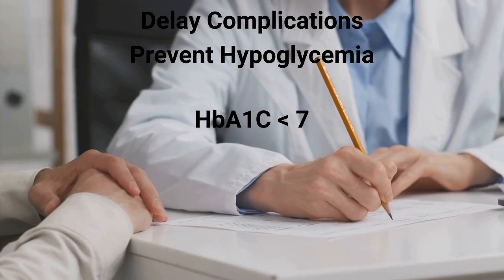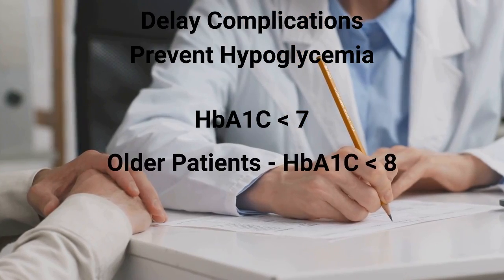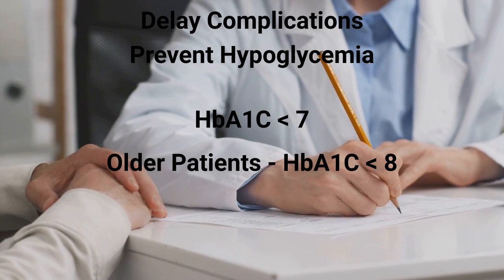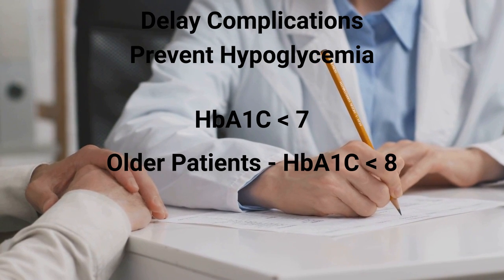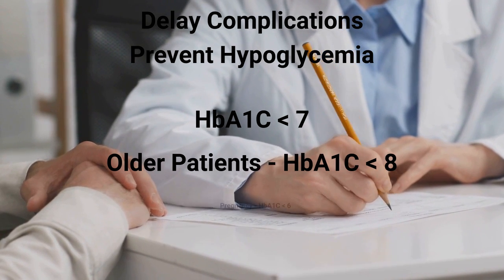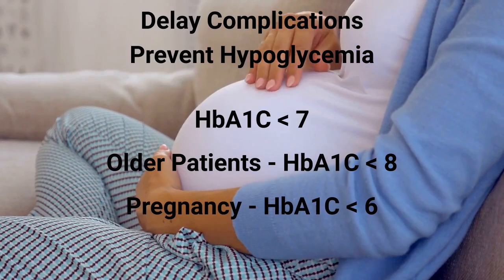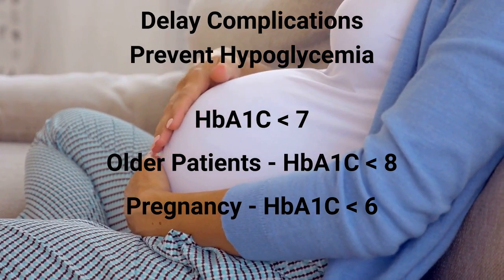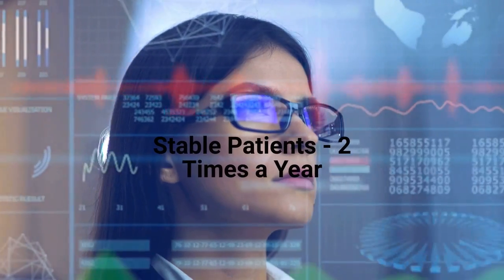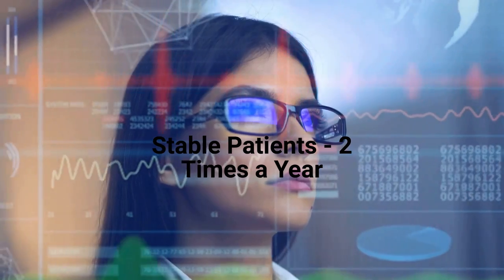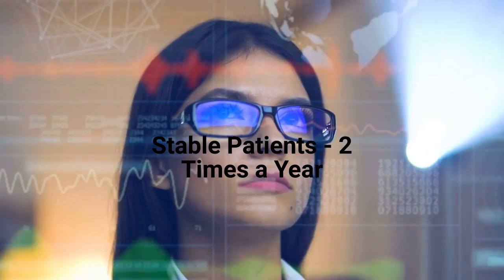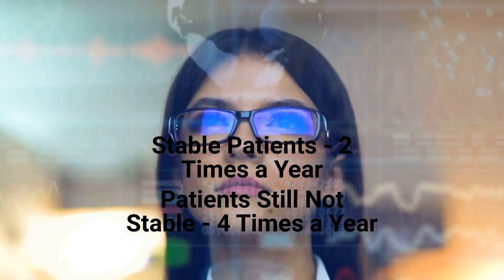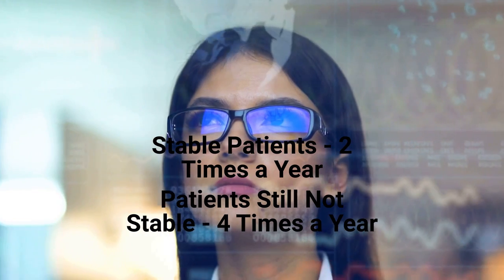For older patients, especially those with a history of severe hypoglycemia, the goal should be set higher to a value of less than or equal to 8. During pregnancy, the goal should be set lower to a value of 6. Levels should be checked at least twice a year in patients with stable target levels, and once every quarter in patients who still do not meet hemoglobin A1c goals.